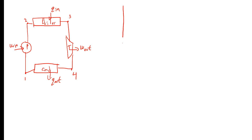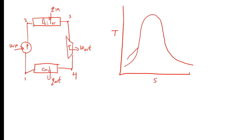On the TS diagram, temperature is on the y-axis and entropy on the x-axis, with a saturation curve. We have the lower pressure line at 10 kilopascals and the upper pressure line at 10 megapascals. For the ideal cycle: state 1 to state 2 is isentropic compression; state 2 to state 3 is constant pressure heat addition; state 3 to state 4 is isentropic expansion; and state 4 to state 1 is isentropic heat rejection.